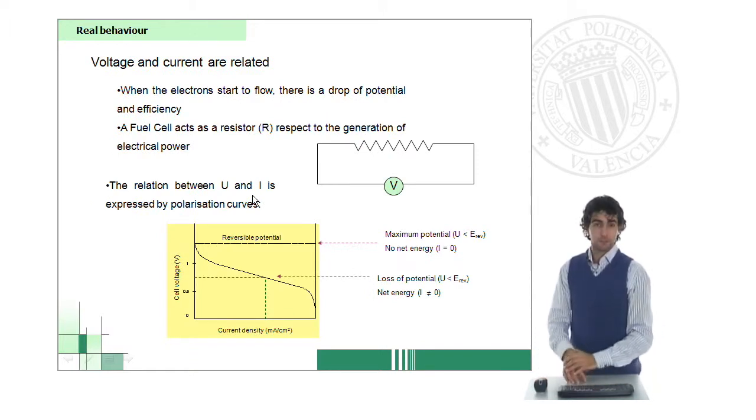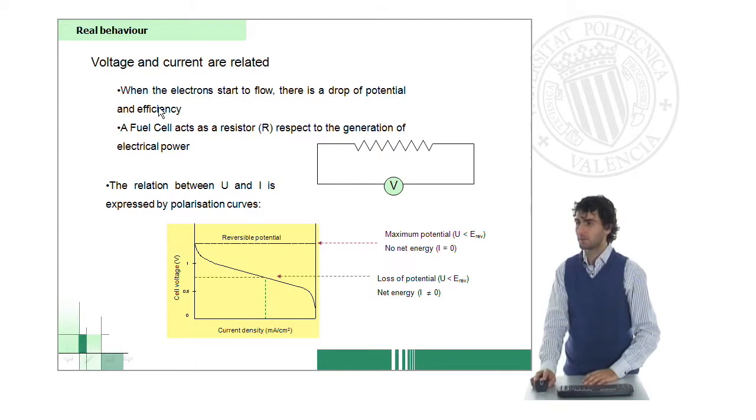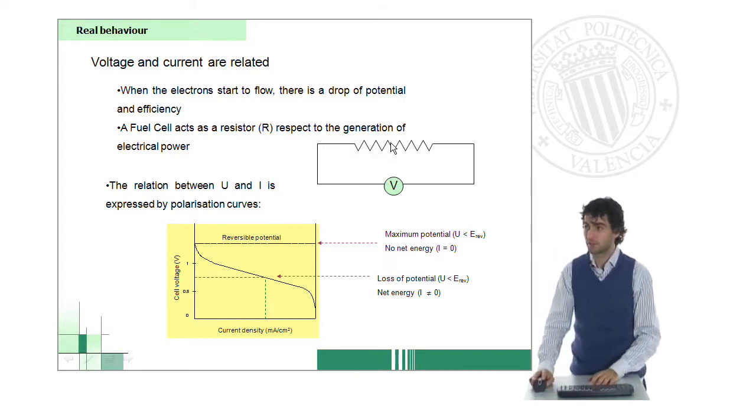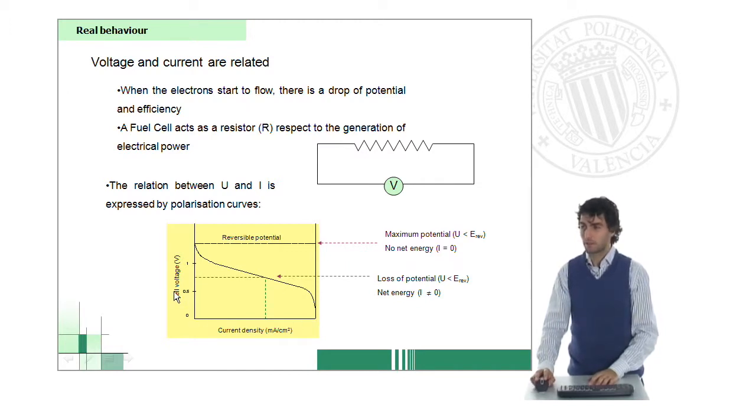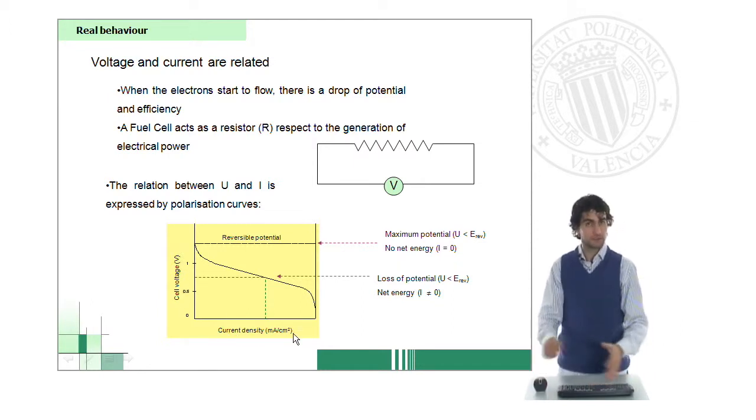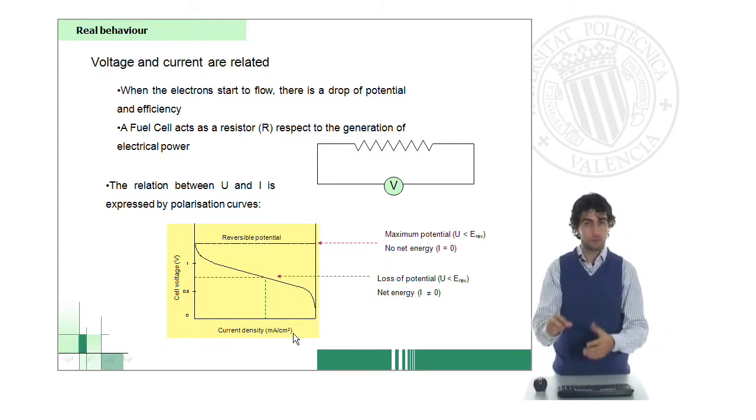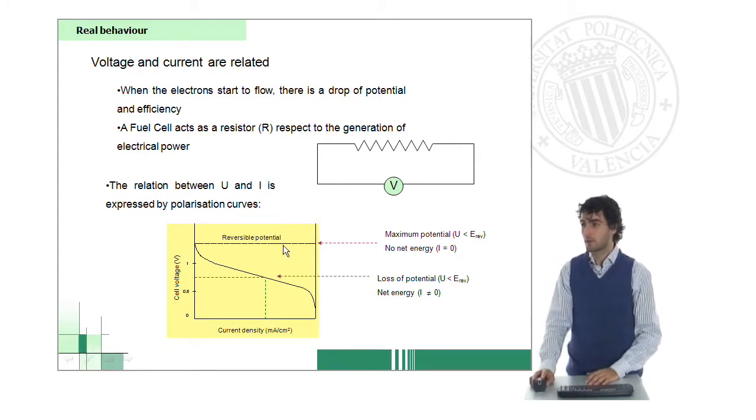This happens because voltage and current are related, the same way they're related by a resistance in a very simple circuit. In a fuel cell, we will also have a relation between the cell voltage that we have and the current density, or the flow of electrons. Indeed, if you have a look at this curve, which is called a polarization curve...